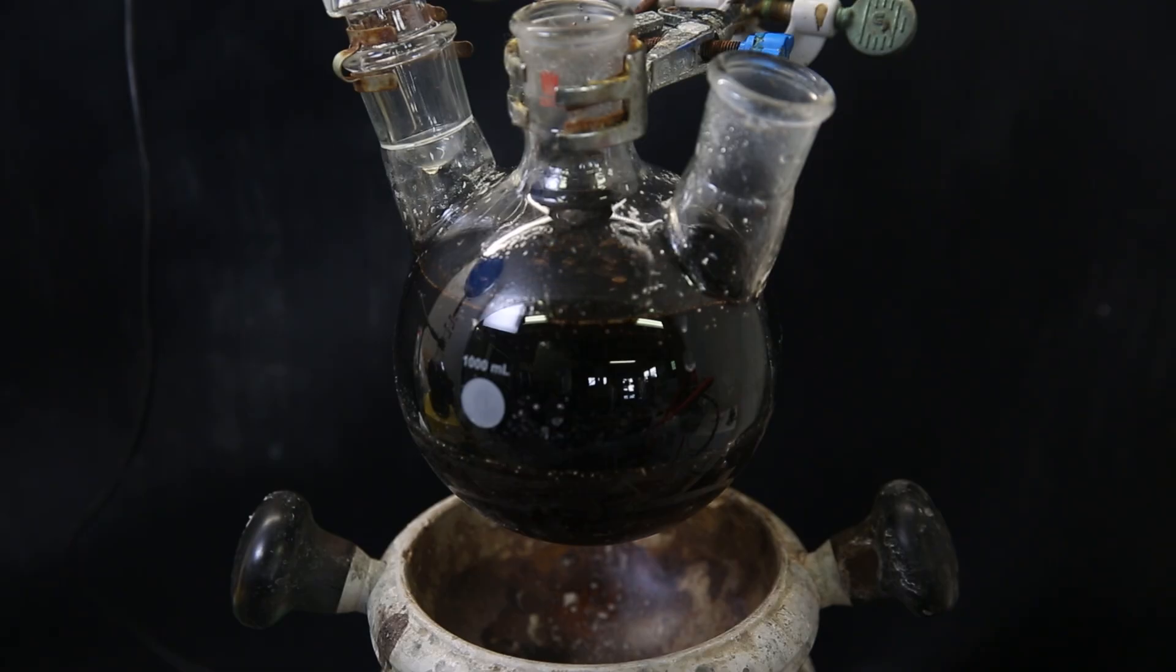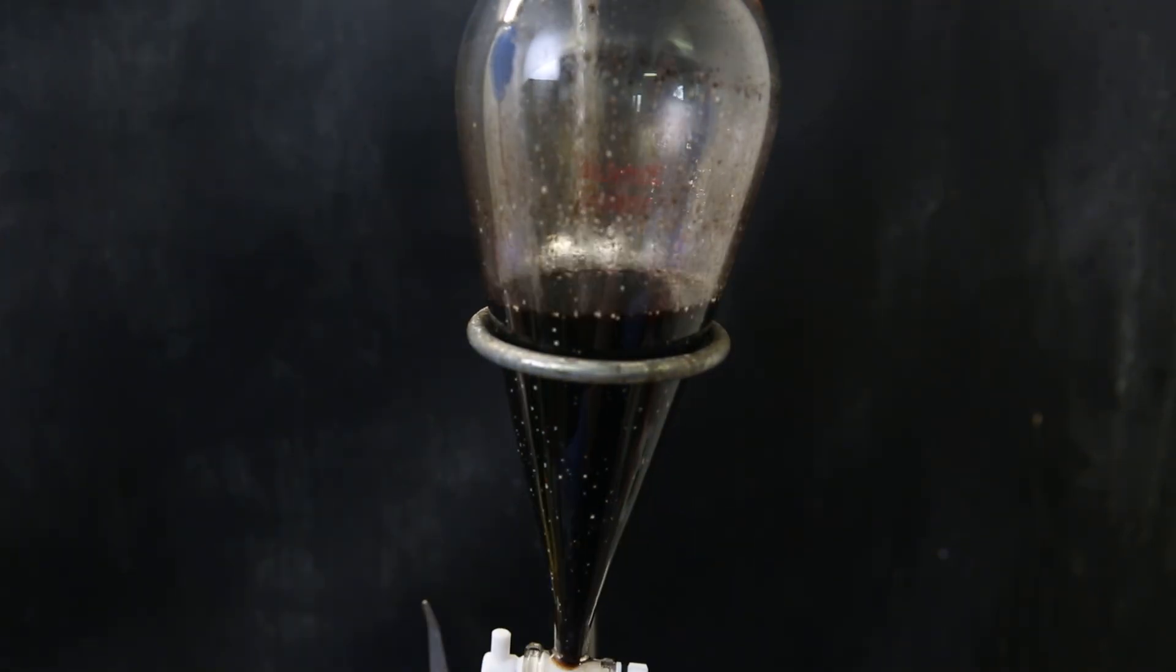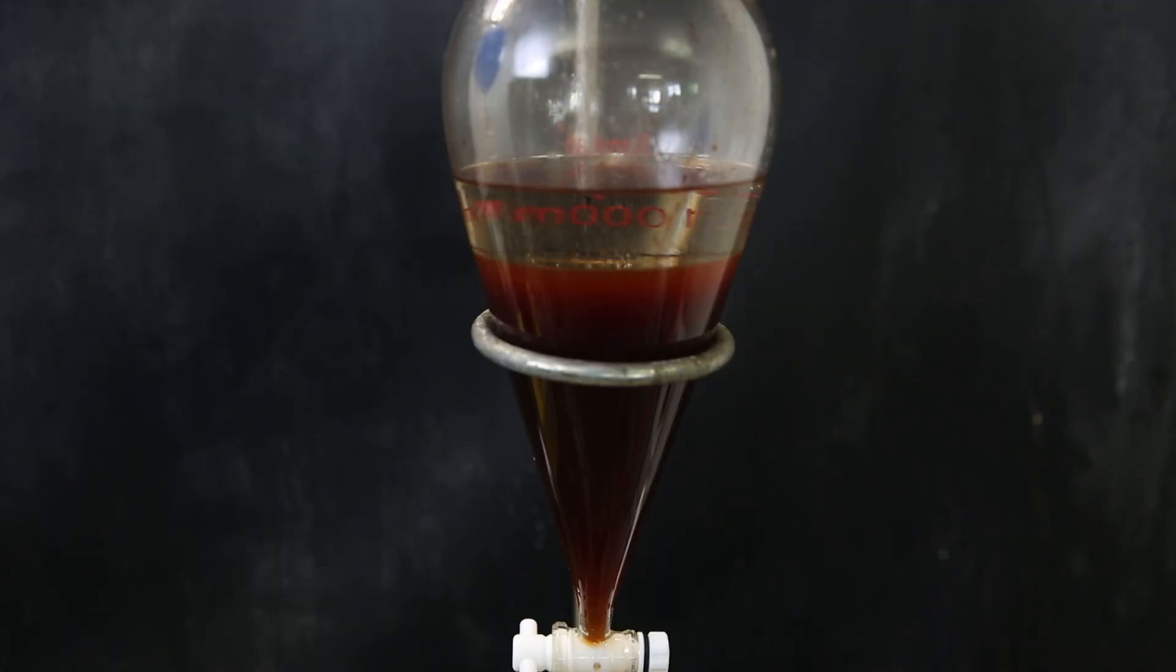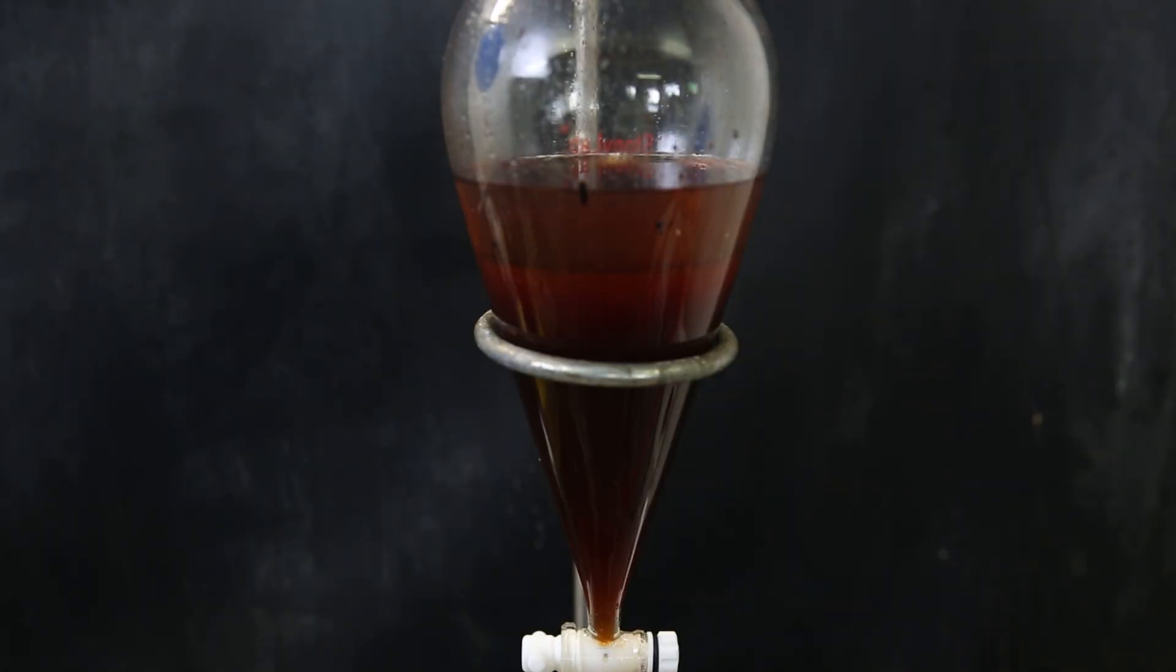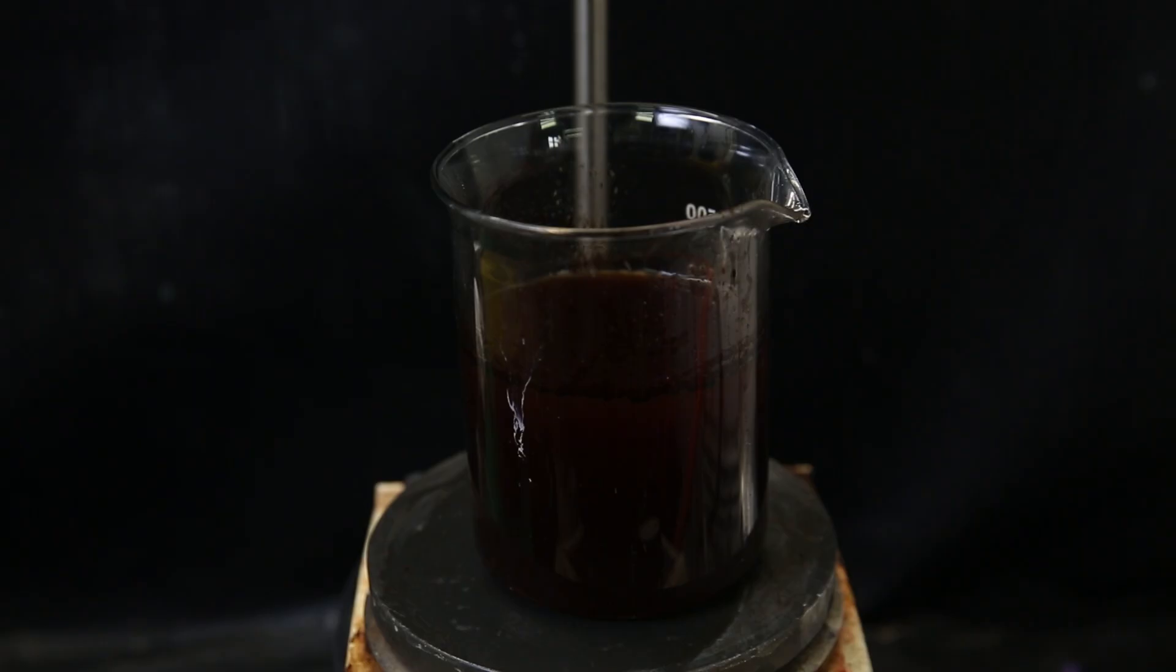The bottom layer contains the water-soluble salt of the product, so I separate the layers, and discard the top toluene layer. I then bring back the water layer, and extract it once with toluene, to get out mostly the side product of biphenyl. Now I have the solution containing the hydrobromide salt of the product.